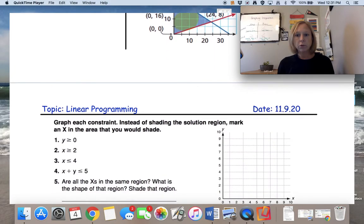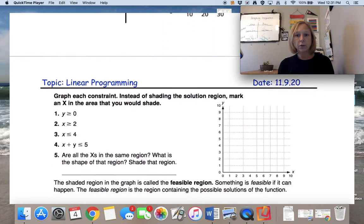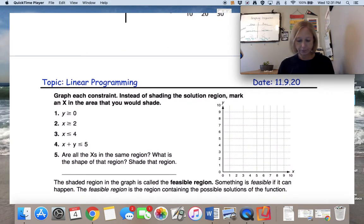So let's do some review and apply this vocabulary to it. It says, graph each constraint. Instead of shading the solution region, mark an x in the area you would shade. We've practiced doing that last week. So let's graph each of these.